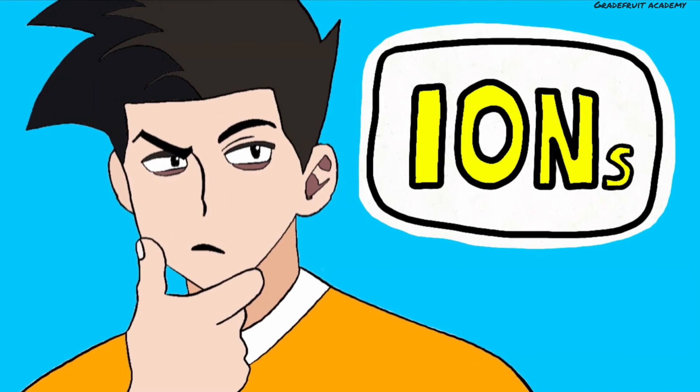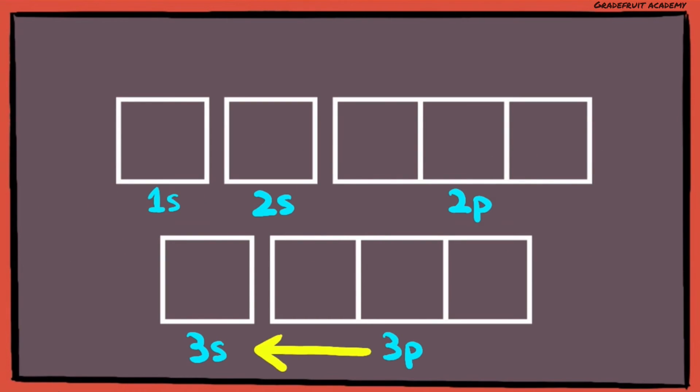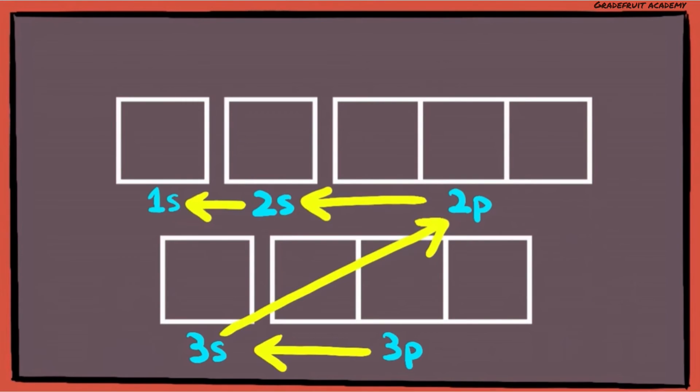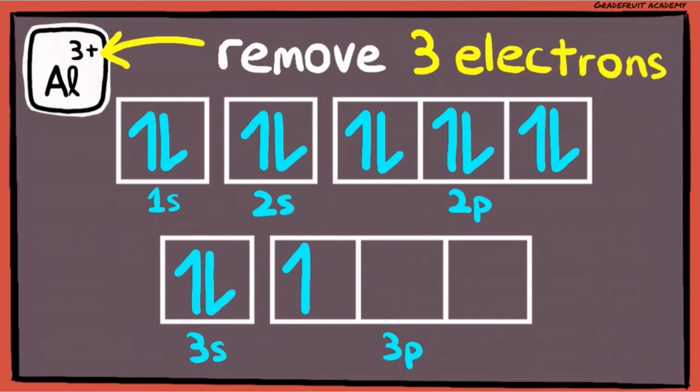But, what about ions? For cations, the electrons are first removed from the highest energy orbital onwards. So, to determine the electron-in-box diagram for the aluminium cation, let's first draw the electron-in-box diagram for a normal aluminium atom. Then, the 3 plus here means that 3 electrons need to be removed to form the cation.